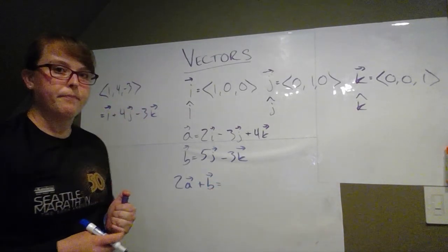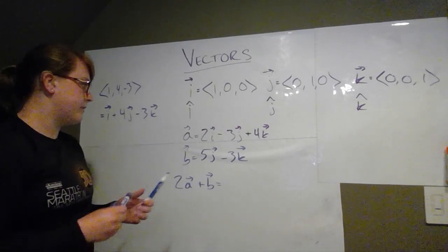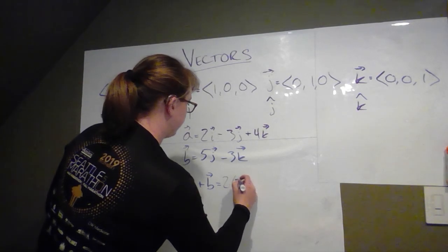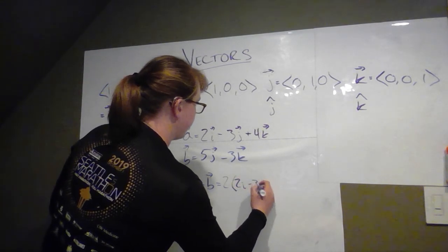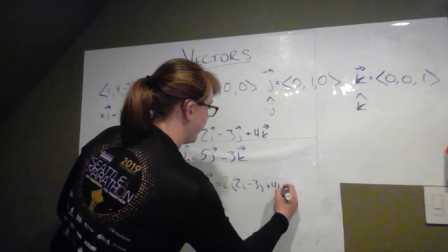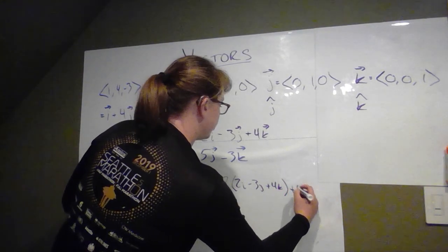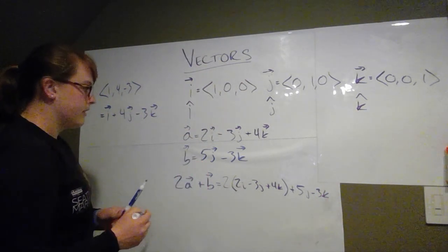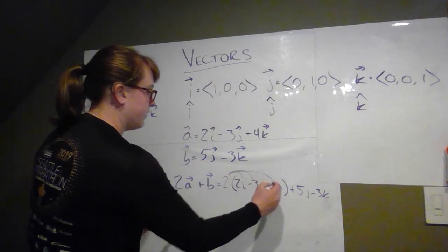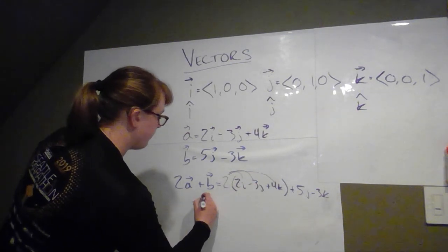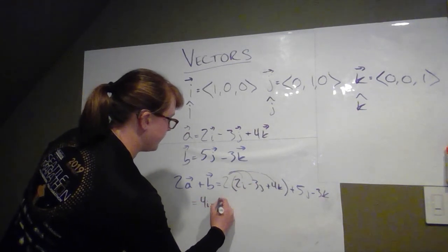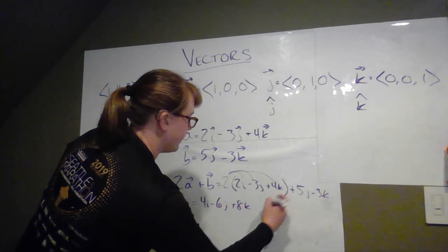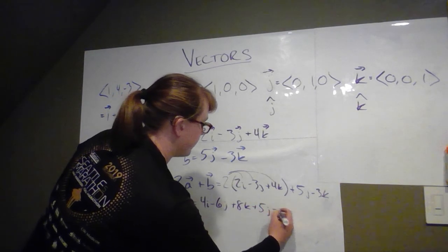Or something like that. So to figure out what 2a plus b is, we would just go 2 times 2i minus 3j plus 4k and then plus 5j minus 3k since that was vector b. And then we distribute the two and we'd go 4i minus 6j plus 8k and then we'd have still our 5j minus 3k.